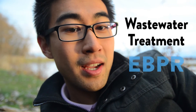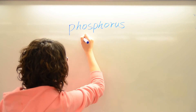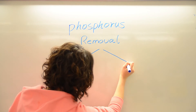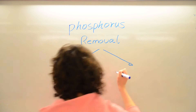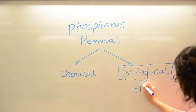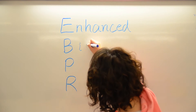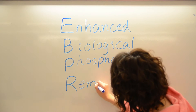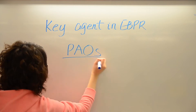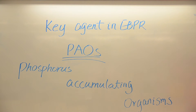One such treatment is EBPR. To remove phosphorus, there are two common methods: the first is chemical and the second is biological. We will focus on the biological method, which is called EBPR — Enhanced Biological Phosphorus Removal. EBPR relies on the ability of phosphorus accumulating organisms, or PAOs, to capture and sequester phosphorus within their cells, removing it from the environment.